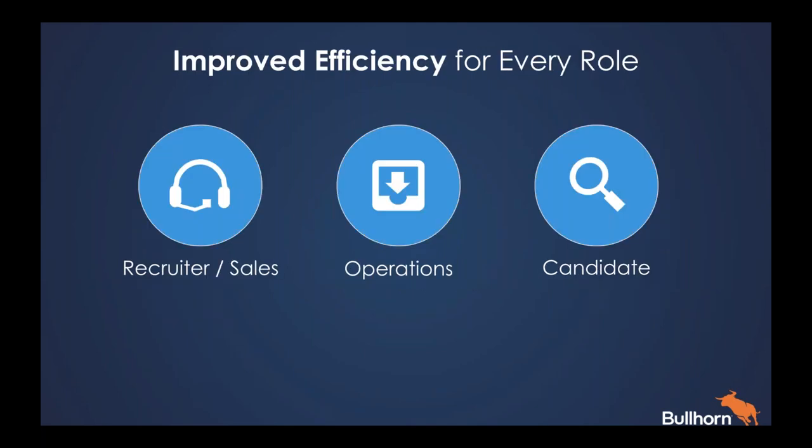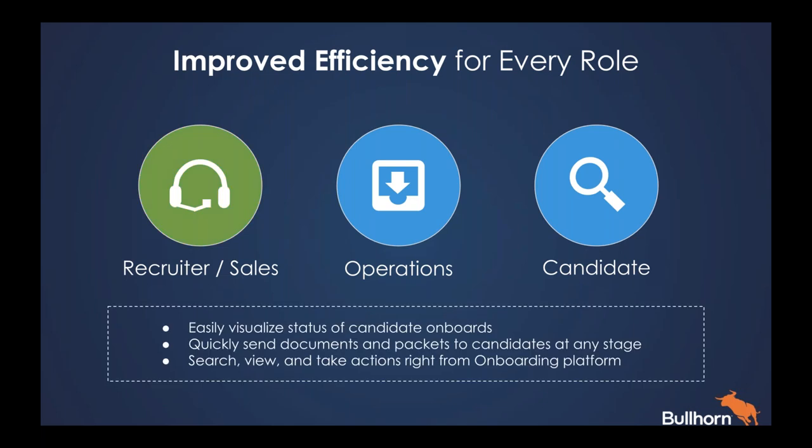It can also improve efficiency throughout the entire process. From recruiting or sales, they can easily visualize the status of candidates on boards — inside Bullhorn's ATS they can look at a candidate record or their dashboard and see the status of candidates and whether they're ready to start working. That removes the need to chase via email, phone, or walking across the office — they can see this data real-time and know exactly when to take action. You can also quickly send documents and packets to candidates at any stage through the process.